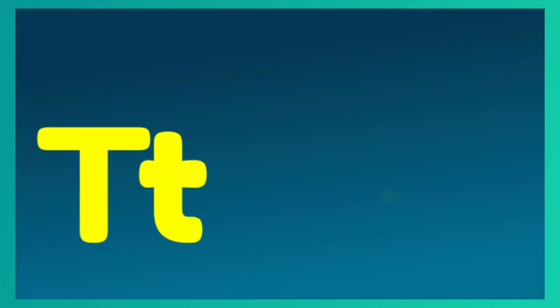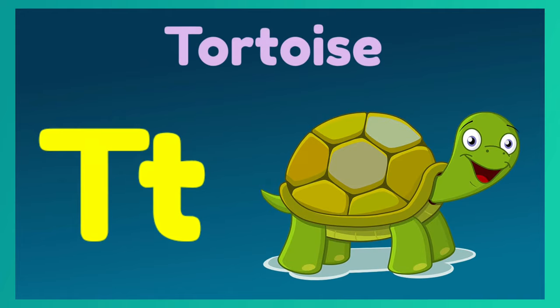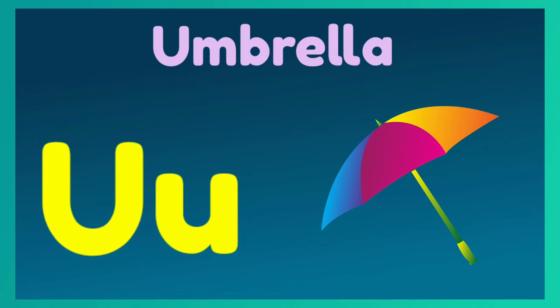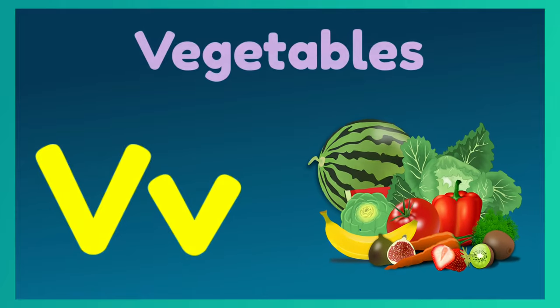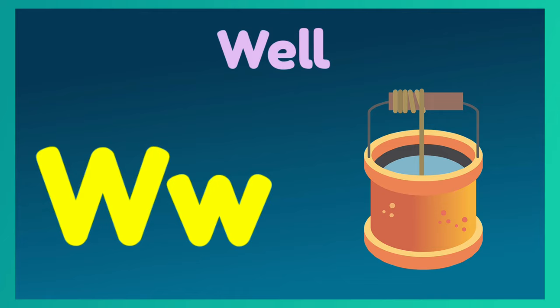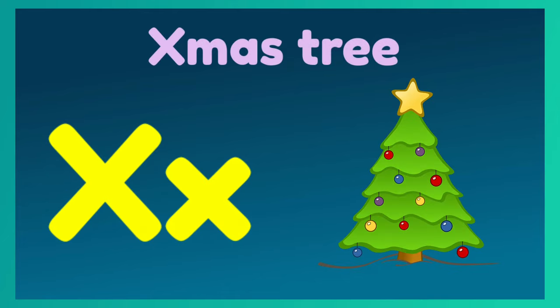T for Tortoise, U for Umbrella, B for Vegetables, W for Well, X for X Mastery.